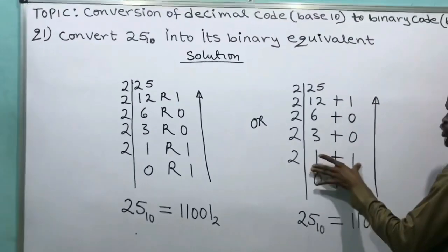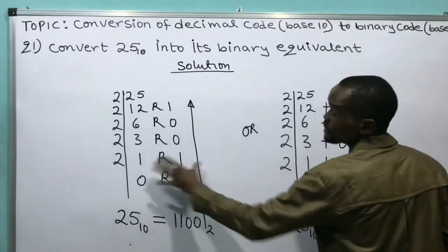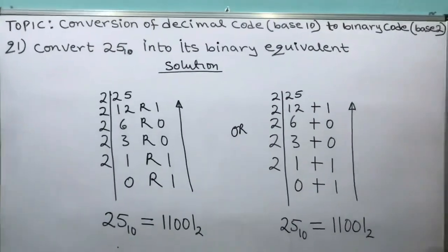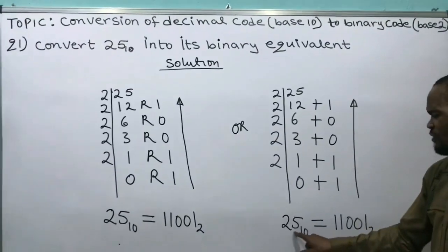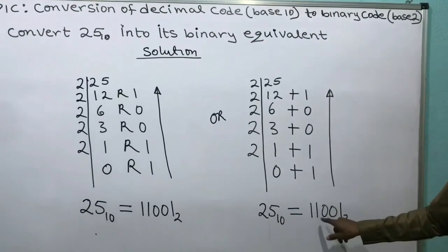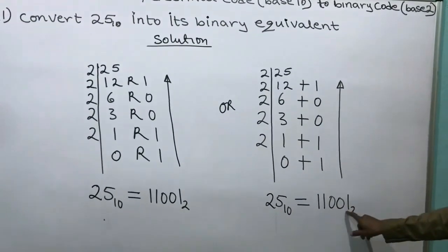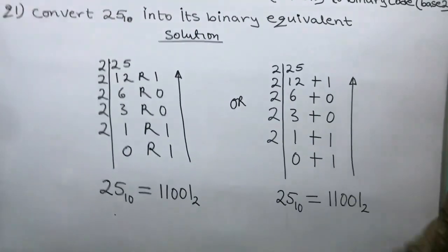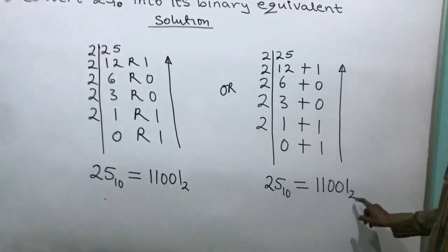When you see someone using this alternative pattern, you will know it is the same method. So when I say 25 base 10, it equals 1, 1, 0, 0, 1 base 2.